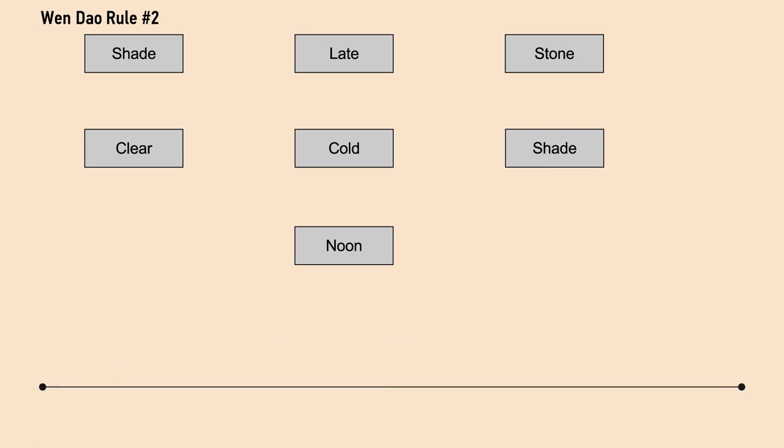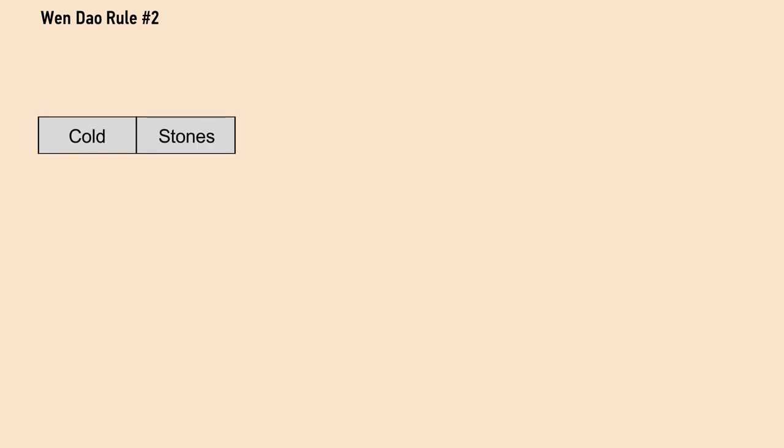Three, group your words into units or groupings. Two together, then two together, and then three together. For example, cold stones, clear streams, late noon shade.